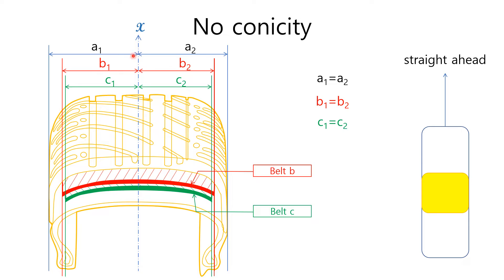If all the center lines of belts are placed at the longitudinal center line of the entire tire, there will be no conicity and the vehicle drives straight ahead. As shown in the picture, the x-axis is the longitudinal center of tire geometry. Therefore, a1 is equal to a2. If the belt centers coincide with the tire geometric center, there will be no conicity, as shown in the right picture — the tire is rolling straight ahead.